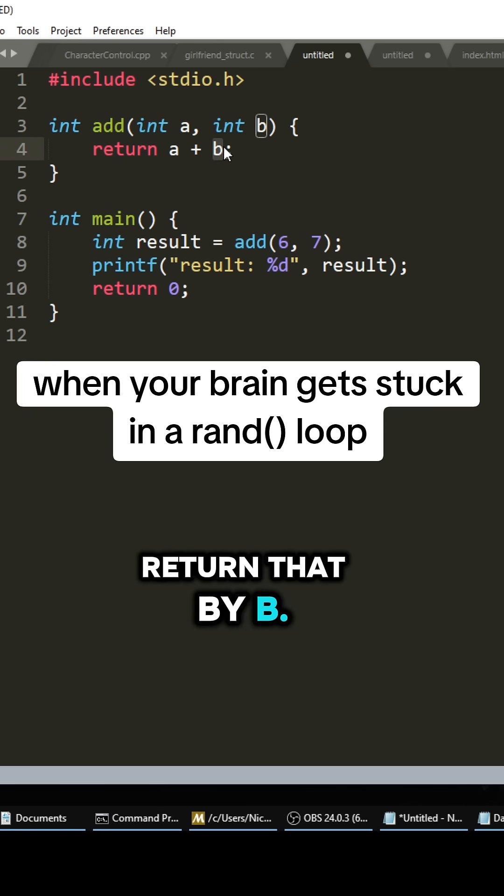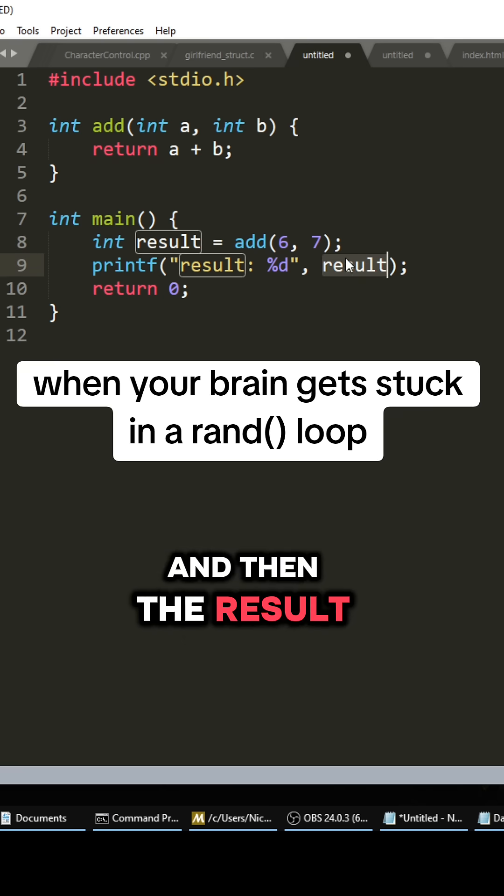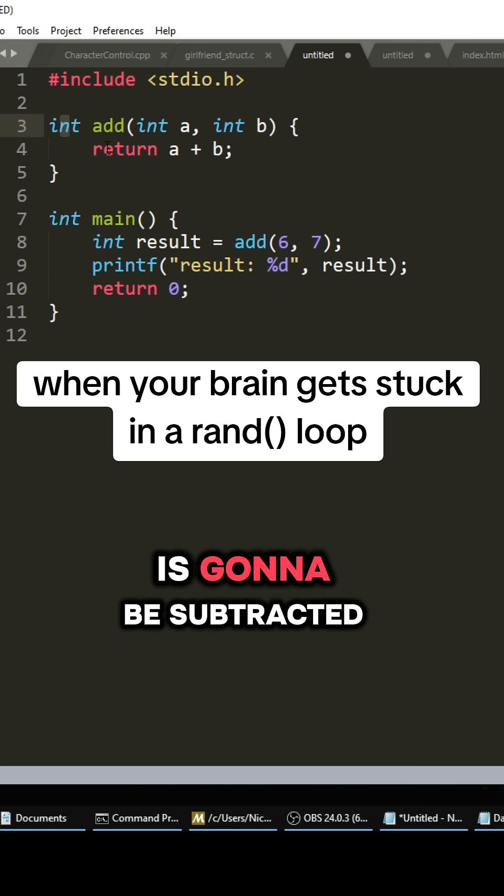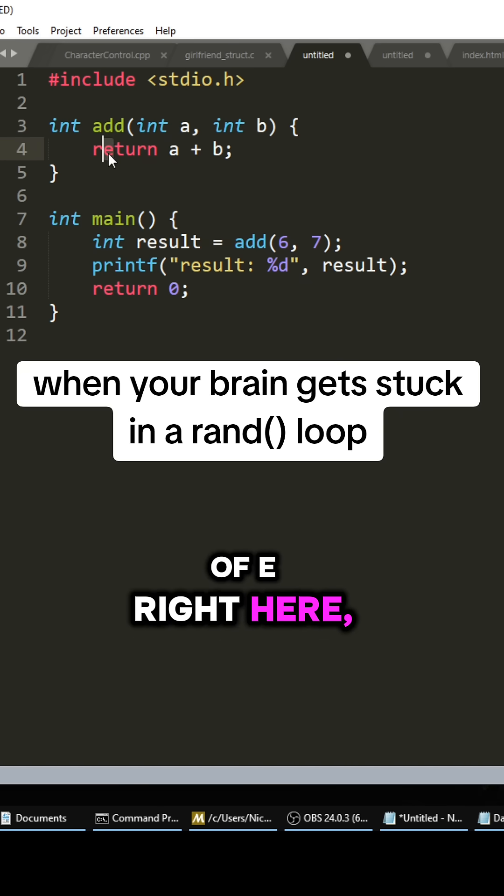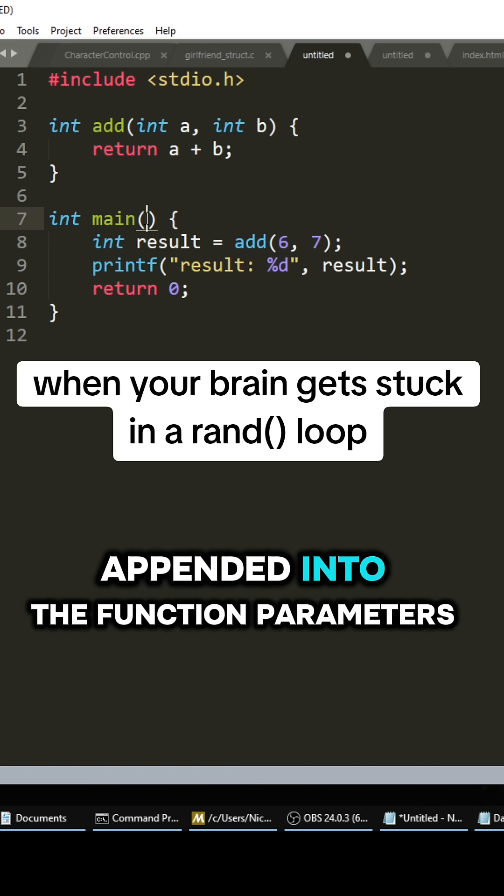And we're going to get the power of six from b, and then the result right here is going to be added to the int. And then the n value of that result is going to be subtracted from the ASCII value of e right here, which is going to be appended into the function parameters.